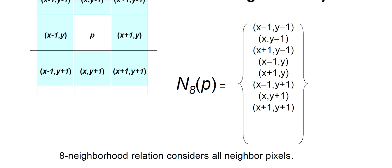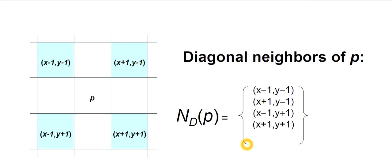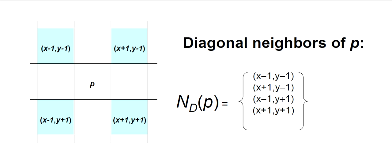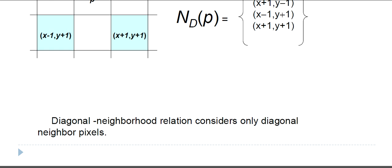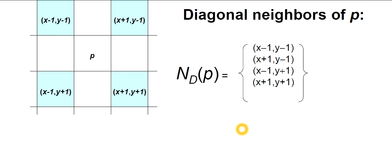Eight neighborhood relation considers all the neighboring pixels. Now we have the diagonal neighbors of P. The diagonal means the corner positions. The diagonal neighbors of P are: x-1, y-1; x+1, y+1; x+1, y-1; and x-1, y+1. So this is the diagonal neighbor of P. Diagonal neighborhood relation considers only the diagonal neighbor pixels, as is clear from the diagram.